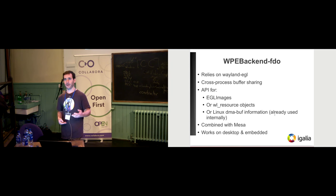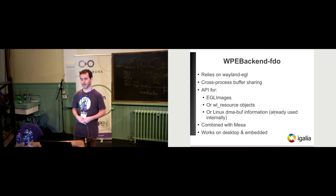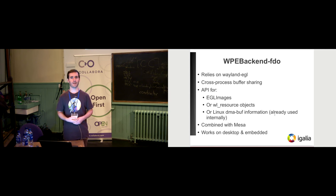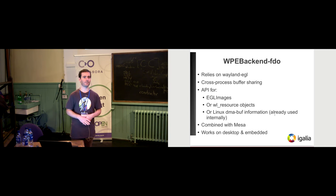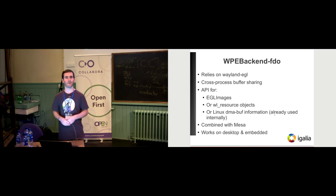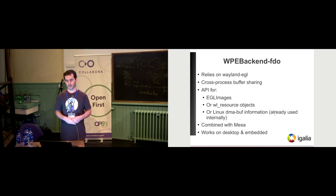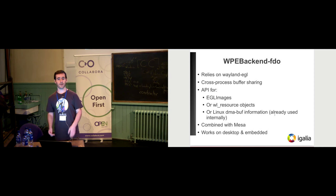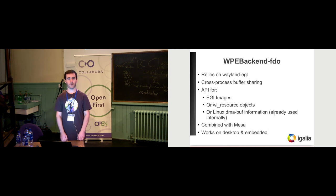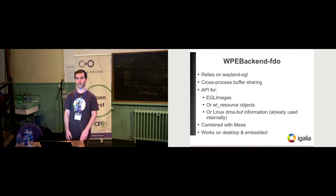We have three API types: EGL images, Wayland resources, and in the future we plan to also support Linux DMA-buf descriptors. We use them internally right now because it was a requirement for running on very recent Wayland versions. Historically it was combined with Mesa because that's where Wayland EGL was, and it works on desktop and embedded devices quite well.